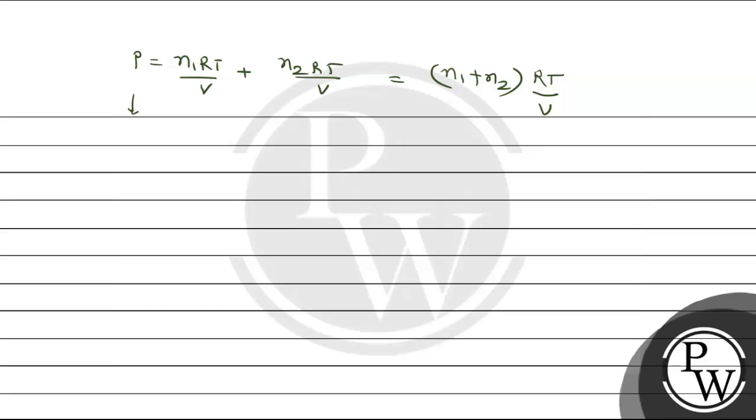Given that the pressure of gas mixture 100 into 10 to the power 3 Pascal equals n1 plus n2, and r value is 8.3 Joule per Kelvin per mole, into temperature 300 Kelvin, divided by volume 2000 into 10 to the power minus 6 meter cube. After calculation we get N1 plus N2 equals 0.08 mole. This is equation number 1.